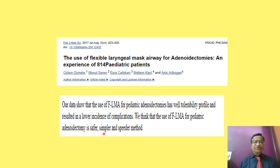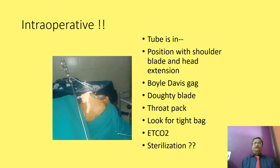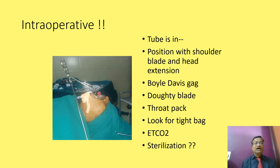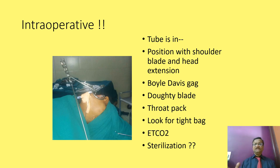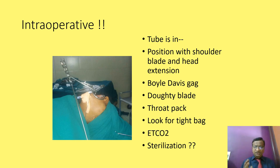One study of 814 pediatric adenotonsillectomies is not a small sample size — the LMA approach is supported. We now use thiopentone or propofol with vecuronium or suxamethonium for intubation. The patient is placed in the Rose position with a shoulder roll. The surgeon sits and places the Boyle-Davis or Doughty blade. As soon as the throat pack is inserted and the position is set, check for tube kinking, verify ventilation, monitor ET CO2, and check airway pressure.